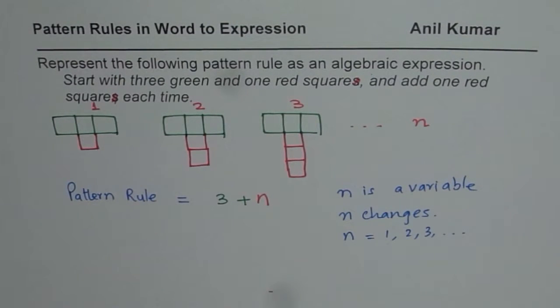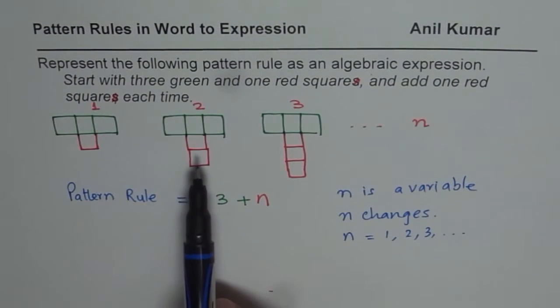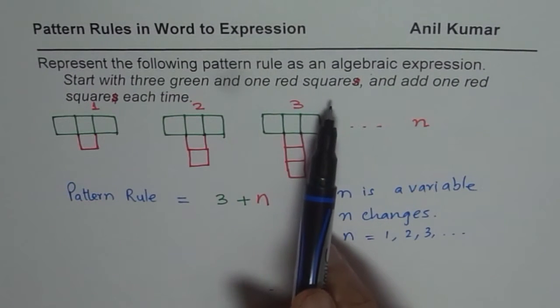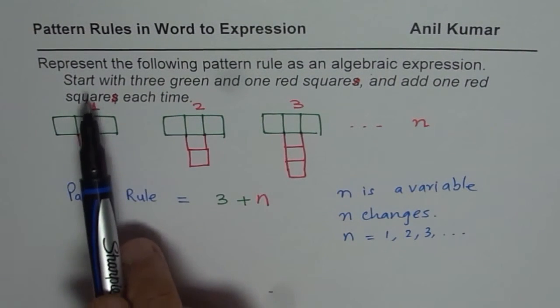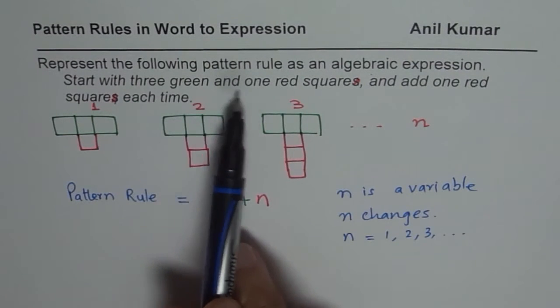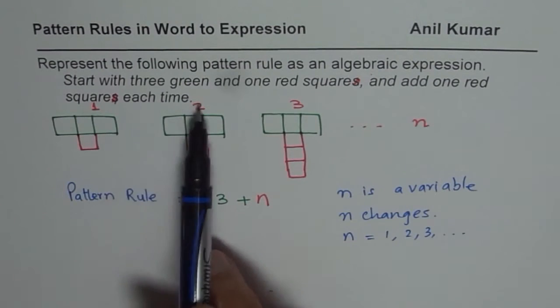So that is how you can define your variable and write an algebraic expression to represent the given situation, which is a pattern. Start with 3 green and 1 red square and add 1 red square each time.